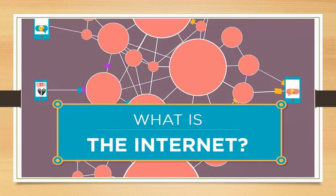First, let's understand what the internet is. Over the past century, important technological developments have created a global environment that is drawing the people of the world closer and closer together. As we entered the new millennium, the internet revolutionized our society, our economy, and our technological systems. The internet is a treasury of knowledge, information, and services available right on your desktop. The internet integrates the technology of communications and computing, providing instant connectivity and global information services to all its users at very low cost. The internet is formed by the global interconnection of hundreds of thousands of otherwise independent computers and information systems.